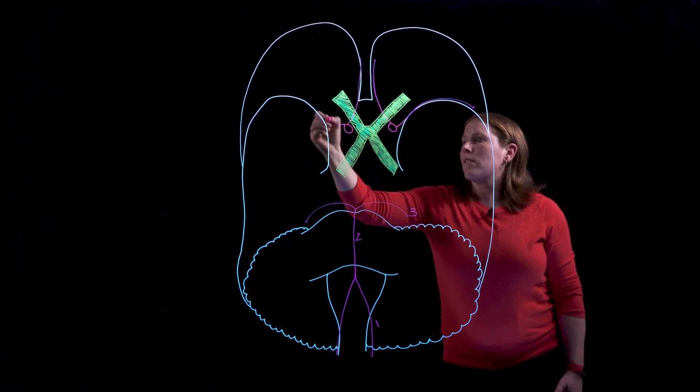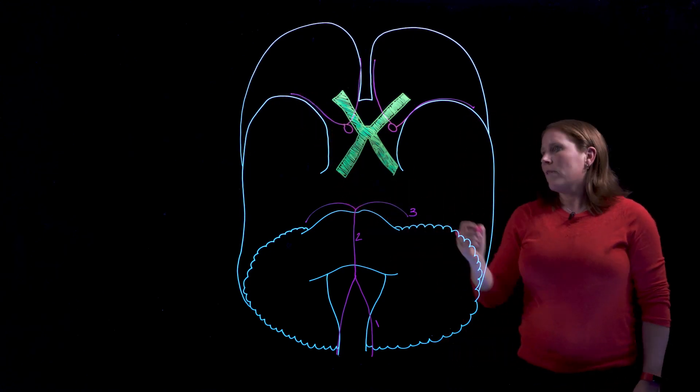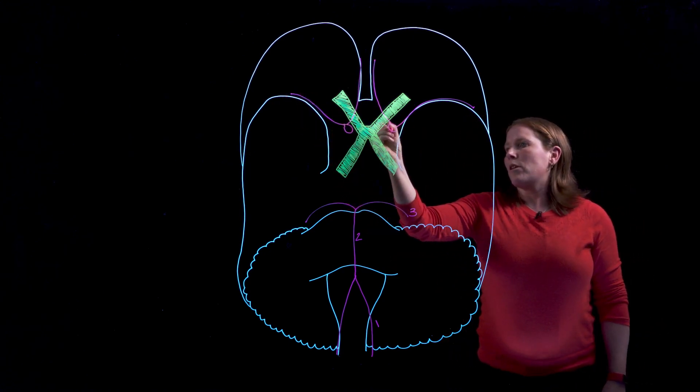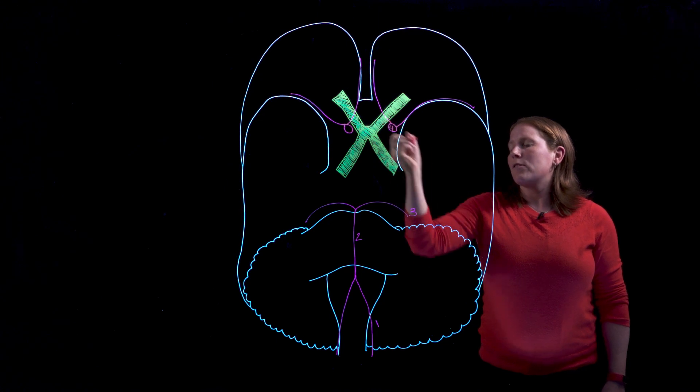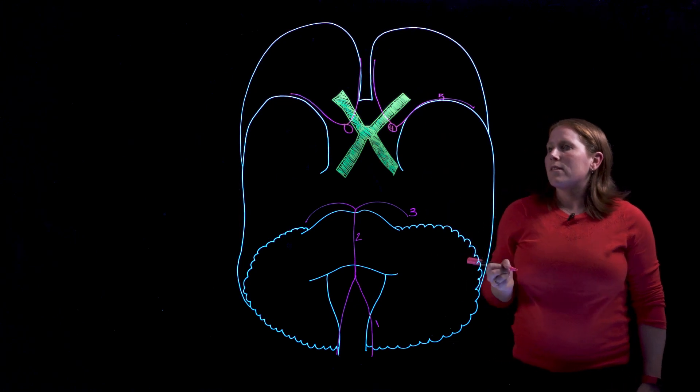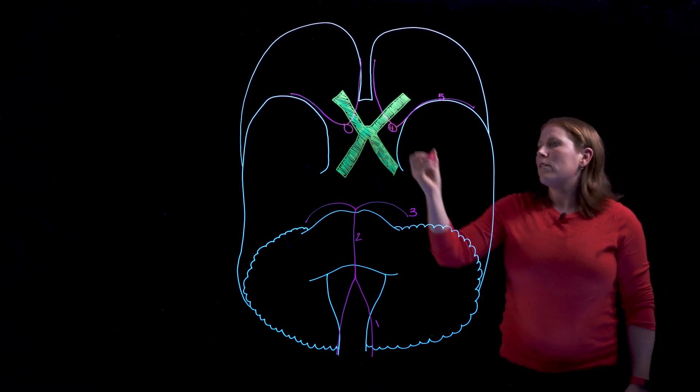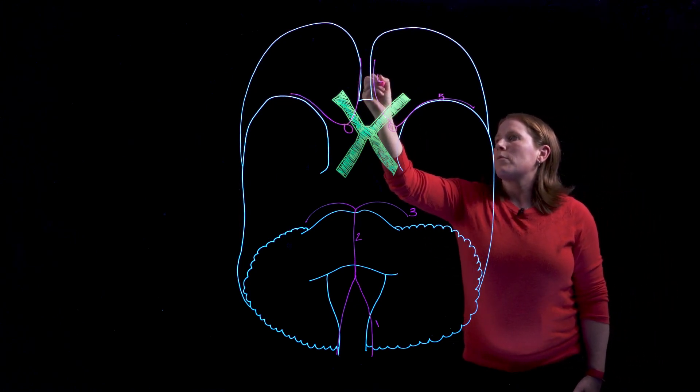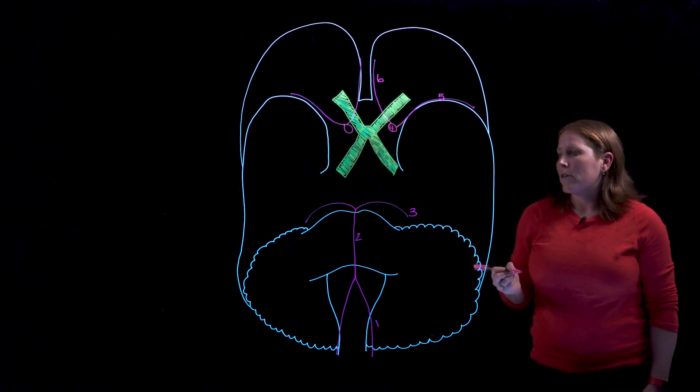This happens on both sides so I'm going to put a number four right here for the internal carotid artery and we'll put a number five this is the middle cerebral artery and number six is the anterior cerebral artery.